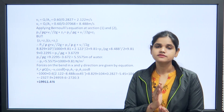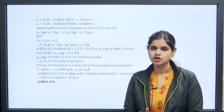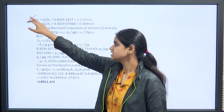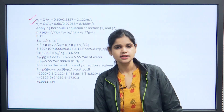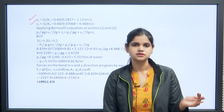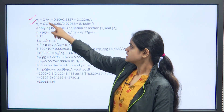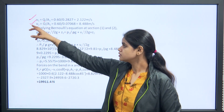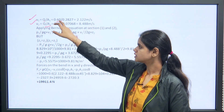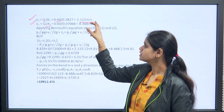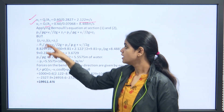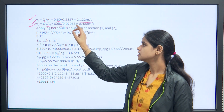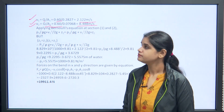Now find V1 and V2 using continuity: V1 = Q/A1 = 0.6/0.2827 = 2.122 m/s. V2 = Q/A2 = 0.60/0.07068 = 8.488 m/s. We need these velocities for the momentum equation formula.